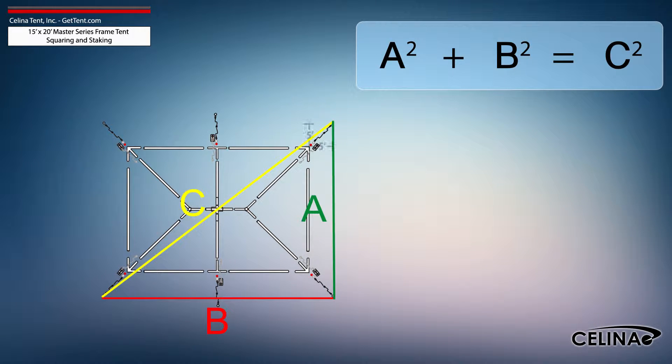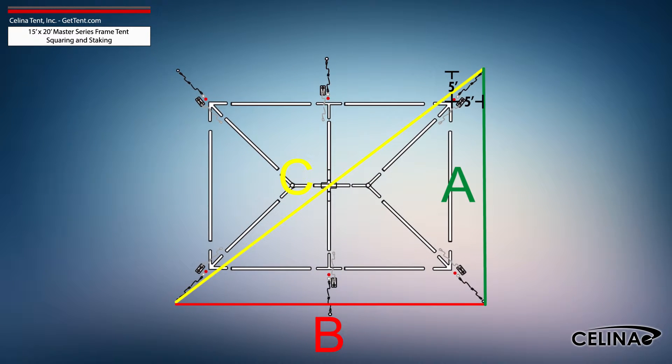Using the Pythagorean theorem and adjusting out for 5-foot staking, the entire tent footprint will be 25-foot by 30-foot with a 39-foot diagonal length.